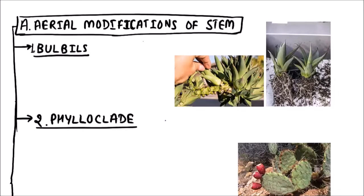Welcome to Studio Biology. In this video we are going to discuss the aerial modifications of a stem. First one is bulbils.